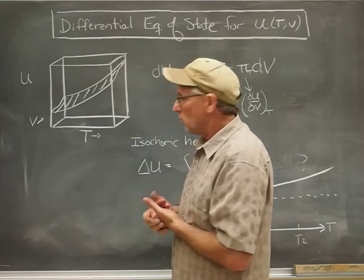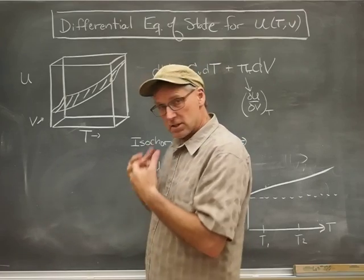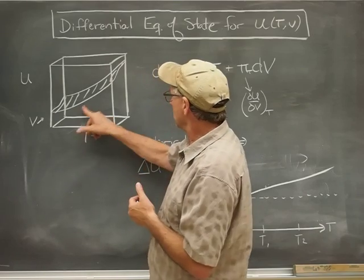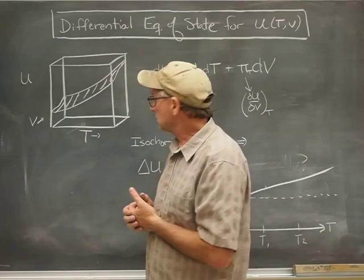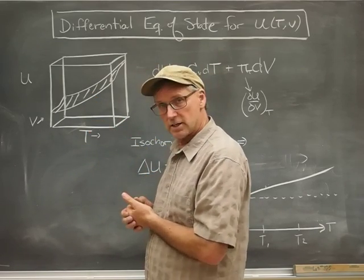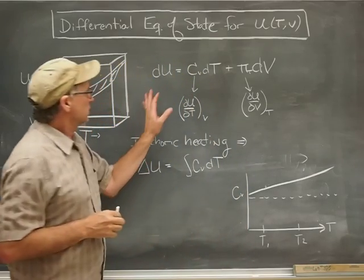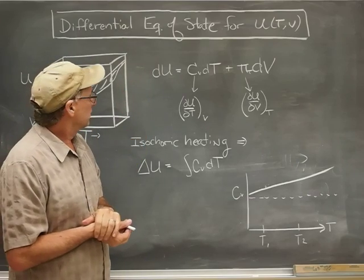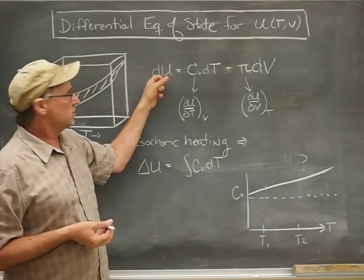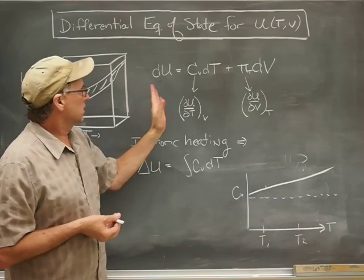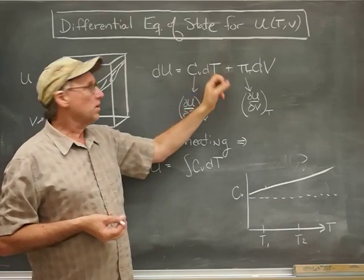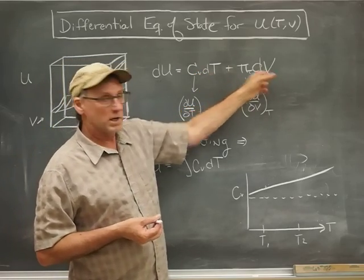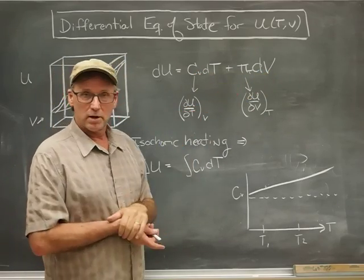The way we like to think about this is incremental tiny little changes in either the temperature or the volume would obviously create a little change in the internal energy. And that's given by this equation right here. This is the differential equation of state for U and it just says that a small change in U could result from a change in temperature multiplied by a coefficient or it could result from a change in the volume multiplied by a different coefficient.